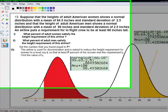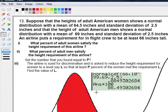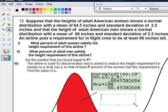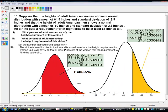So this is the answer to this portion. Makes sense? Now it says that the airline is sued for discrimination. First, it says set the number that you found equal to P. So P equals how much? Eighty-eight point five percent. Good. Make sense? Very good.